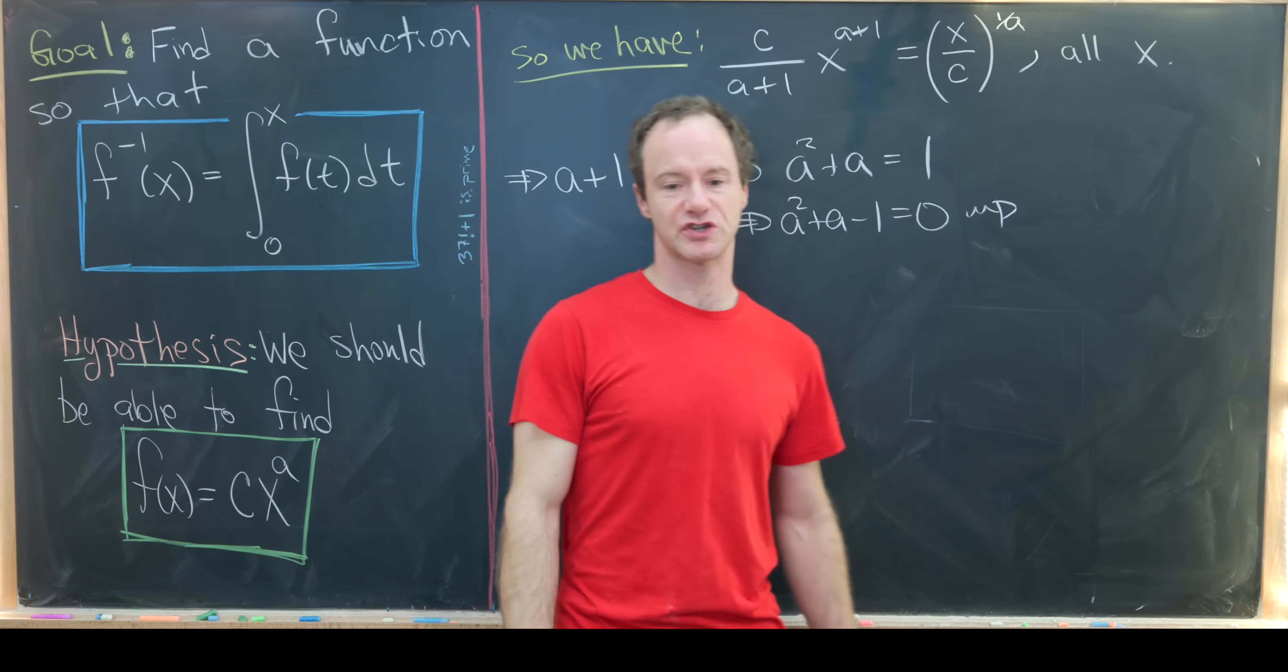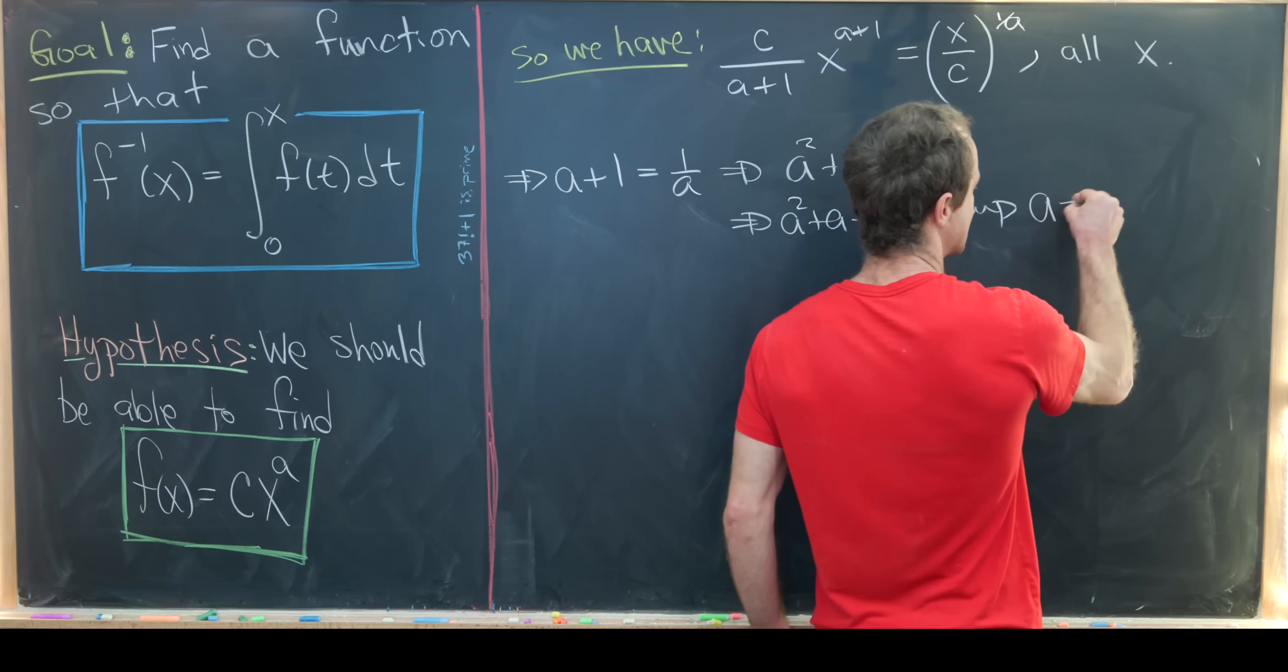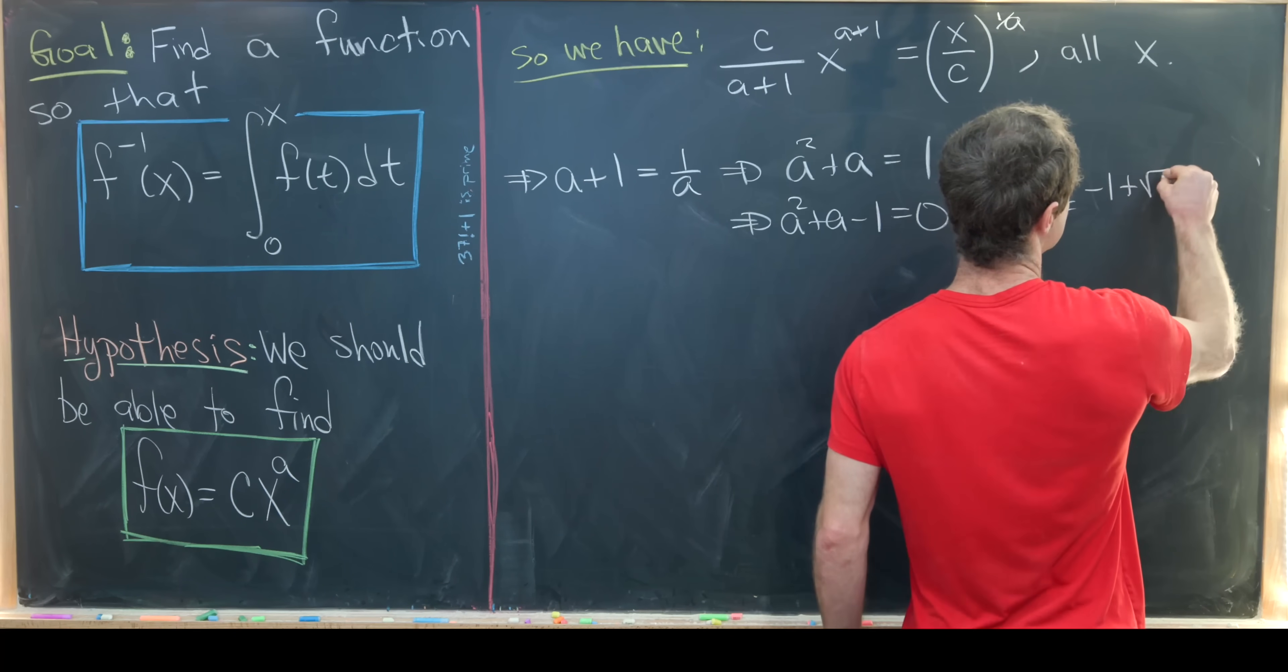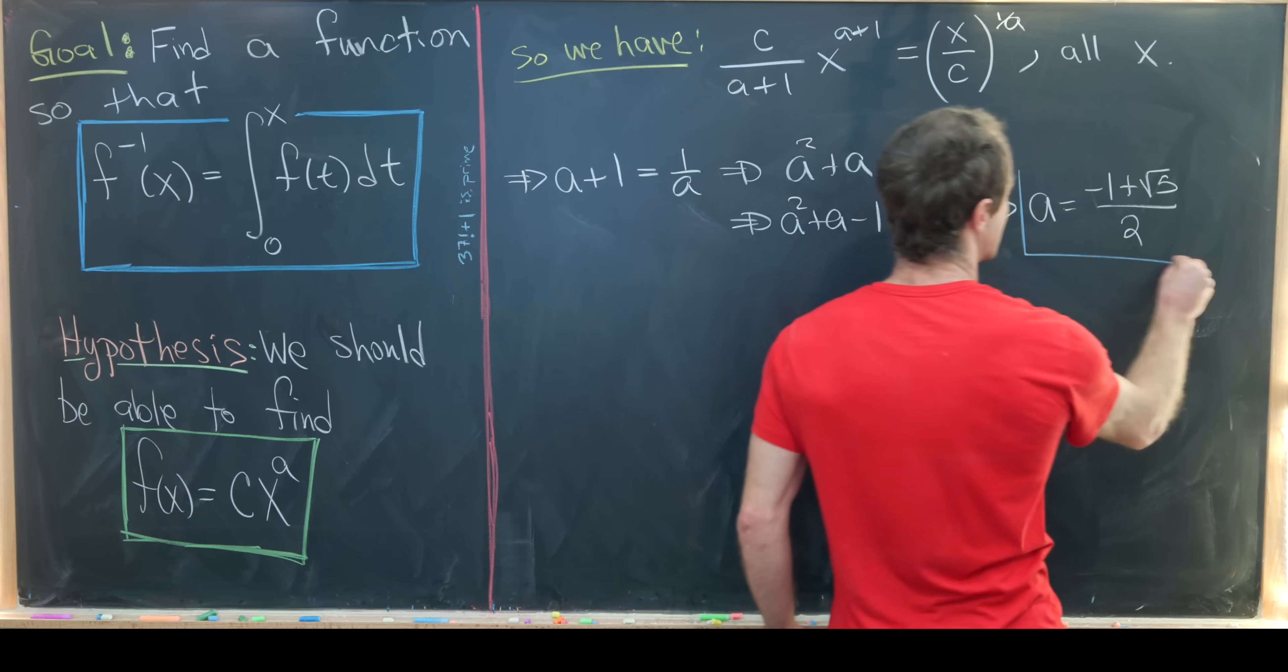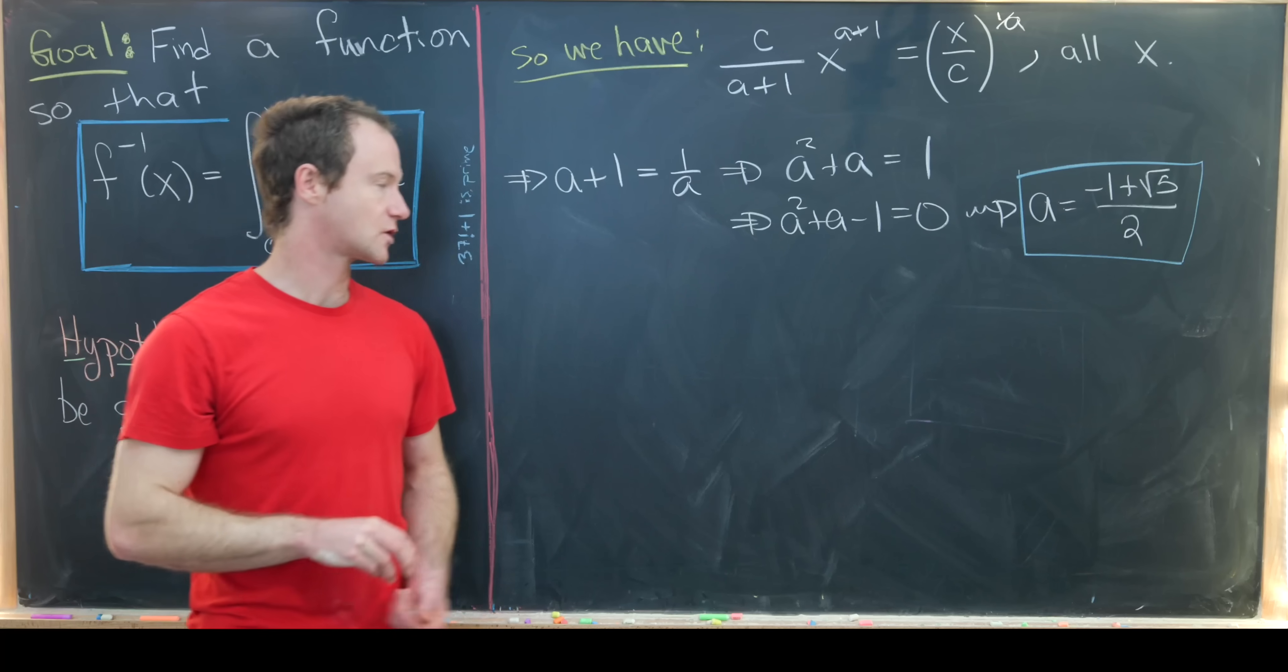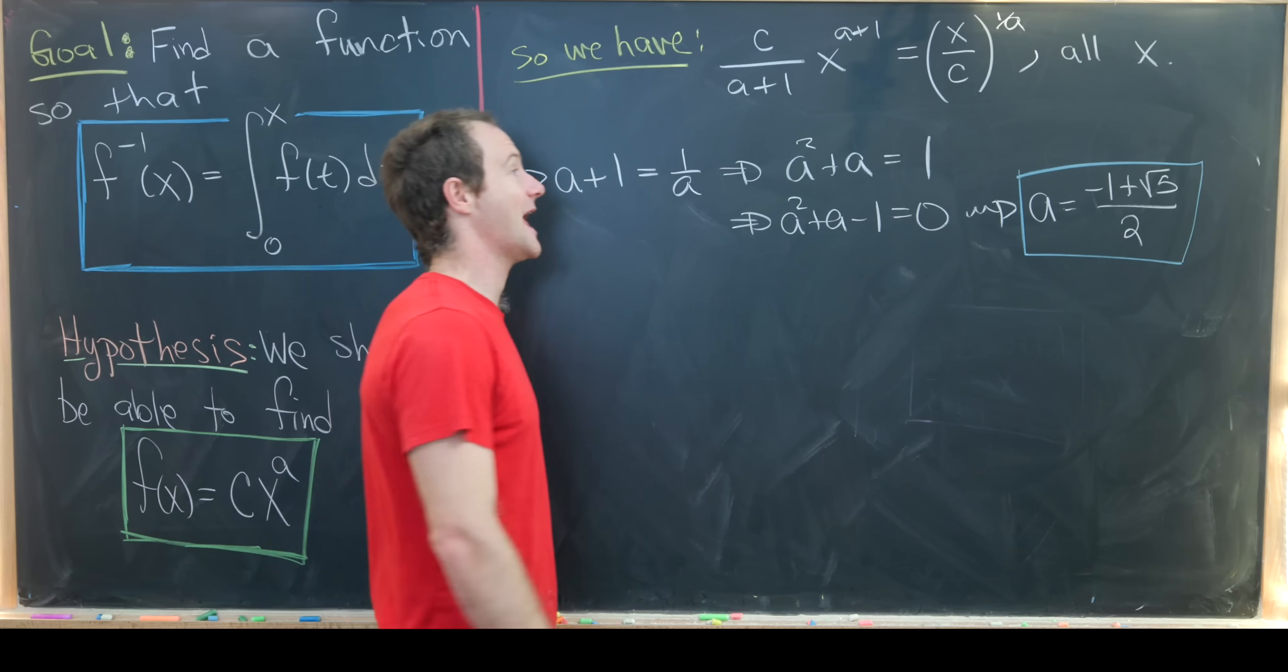We get a squared plus a minus 1 equals 0. Now we can solve for a. We'll get two values of a from the quadratic equation, but I just want to find a function, not all functions. I'll take one of the roots: minus 1 plus root 5 over 2. We get that using the quadratic formula on this quadratic equation in a.